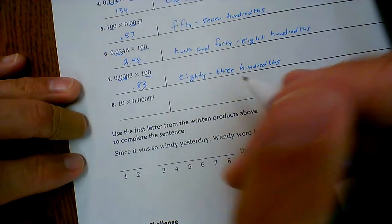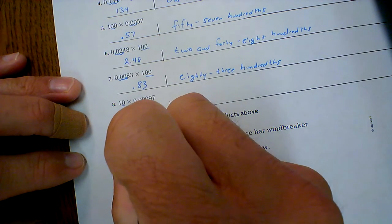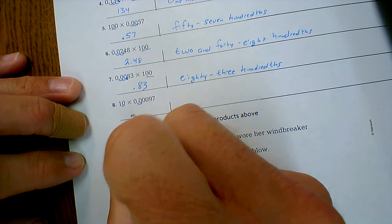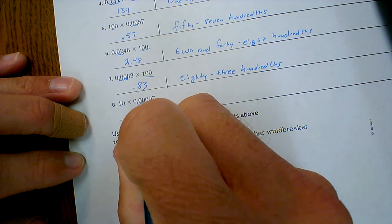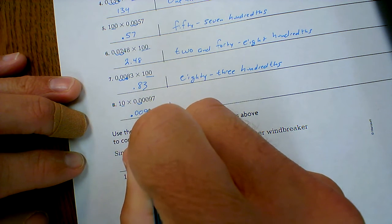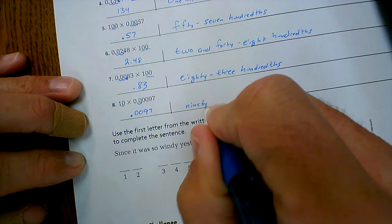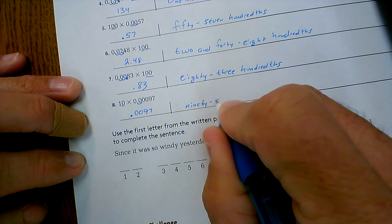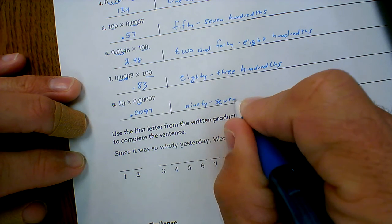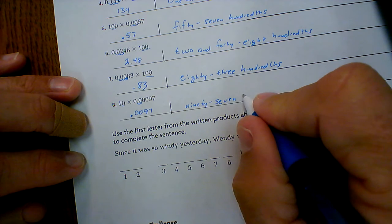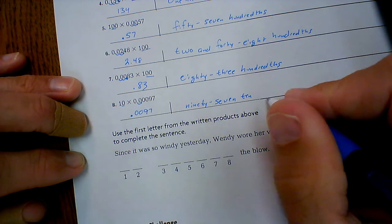And then last but not least, move it over once. Decimal point one, two, zero, zero, nine, seven. So ninety-seven ten thousandths.